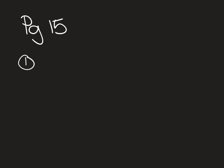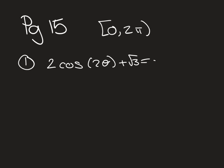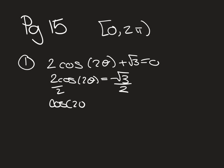Moving to page 15, number 1 — note the interval is 0 to 2π. Solving 2cos(2θ) + √3 = 0: subtract to get 2cos(2θ) = −√3, then divide by 2 to get cos(2θ) = −√3/2. Calling 2θ as x, find where cosine equals −√3/2 on the unit circle: at 5π/6 and 7π/6.